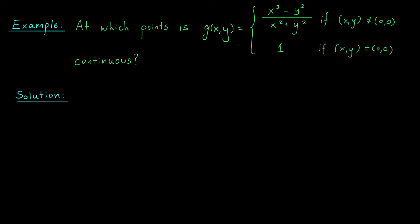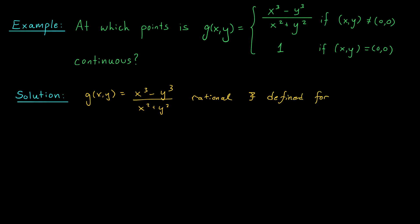Our last function was not continuous at the origin because it was not defined at the origin. I've tried to fix that problem by defining a new function g(x, y) that equals our old function for points away from (0, 0), and is defined to be 1 at (0, 0). Is it continuous now? The function is still continuous at points away from the origin, because at such points the function is rational and those points are in the domain. So based on the fact from the last slide, x cubed minus y cubed divided by x squared plus y squared is rational and defined for all (a, b) not equal to (0, 0), so g(x, y) is definitely continuous at all (a, b) not equal to (0, 0). But what about at the origin itself?